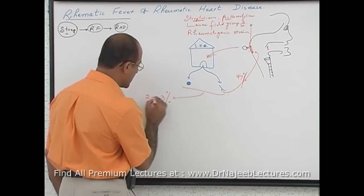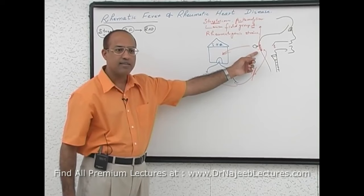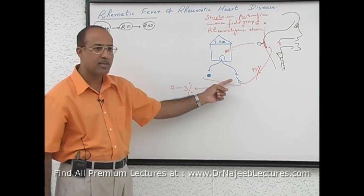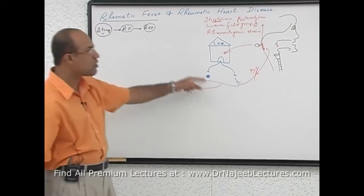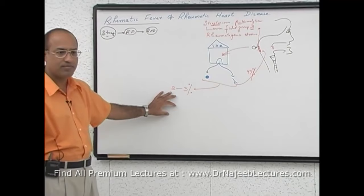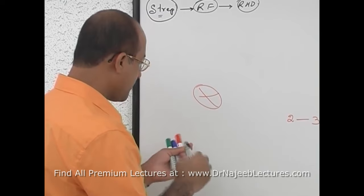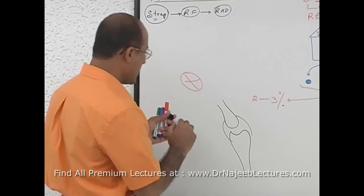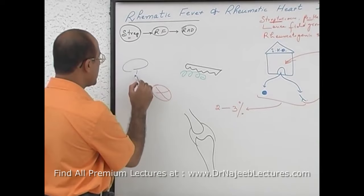Unfortunately, in about 2 to 3% of patients, something different happens. In 97 to 98% of people, the immune response is so specific it fires only on bacteria and destroys them. But in 2 to 3% of the population, the immune system not only fires back on bacteria — it also attacks our own tissue. This may include cardiac tissue, synovial joints, skin, subcutaneous tissue, and the central nervous system.